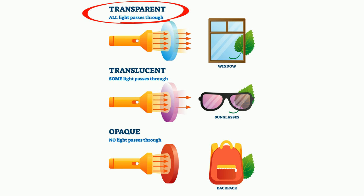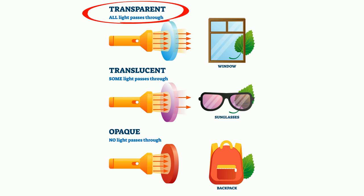A transparent material allows visible light to pass through it. Some of the light may be absorbed, but it is possible to see the objects clearly through this material.